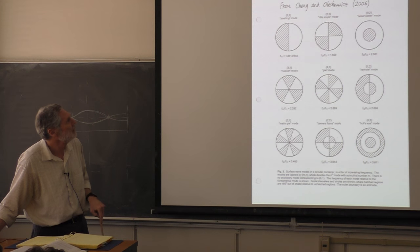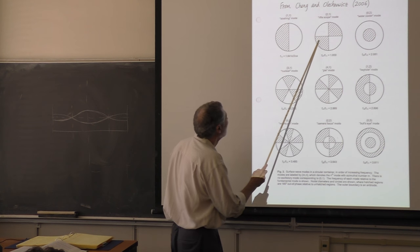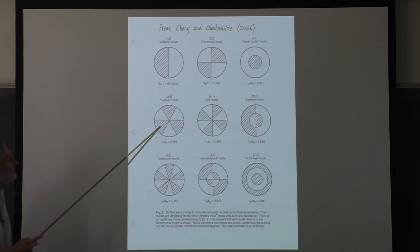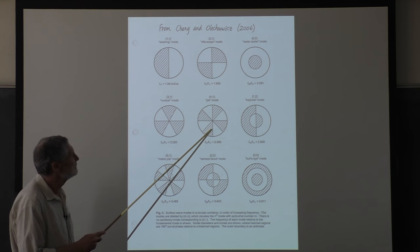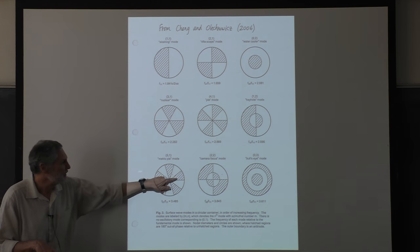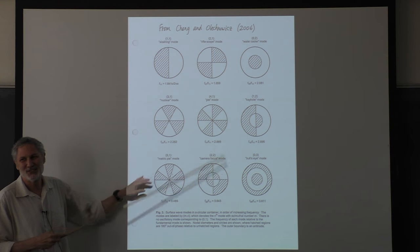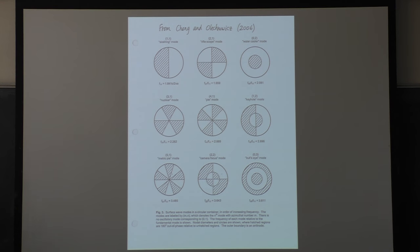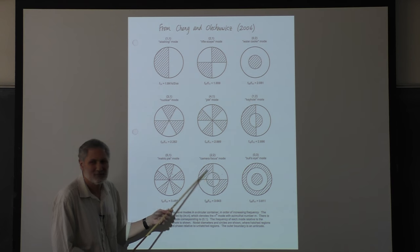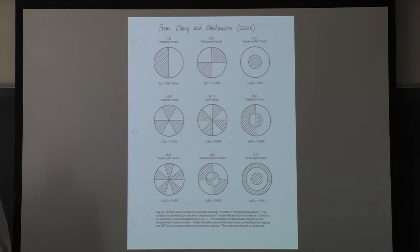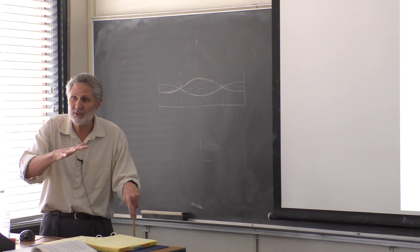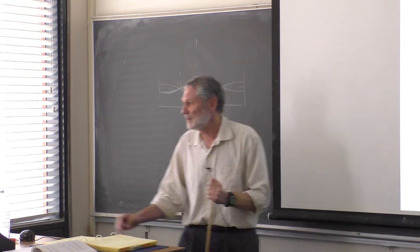In doing our research, we had to quickly describe these modes and got tired of the 1-1, 2-1 notation. So we gave them names. This is standard: Sloshing. Rifle Scope. Water Cooler. Nuclear. Pi Mode. Keyhole Mode - my favorite. Metric Pi: there are 10 petals - we called it the Metric Pi Mode, I think one of the students came up with that. Camera Focus. Bullseye Mode. We did it out of necessity so we could describe and write about them, since different heat settings would change frequencies and excite different modes.